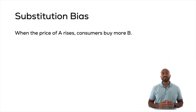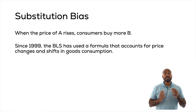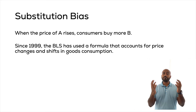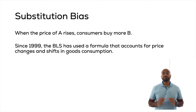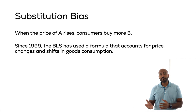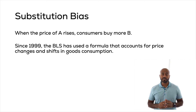The substitution bias is the idea that people substitute away from goods that experience an increase in price. Since CPI holds the basket constant, it will overestimate the true cost of living. For instance, if the CPI basket includes coffee and coffee becomes more expensive, people might substitute towards tea. Since 1999, the BLS has used a formula to adjust for shifts in consumption.